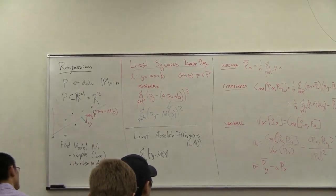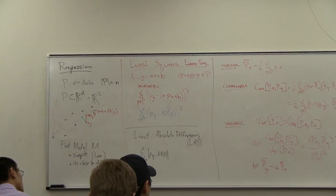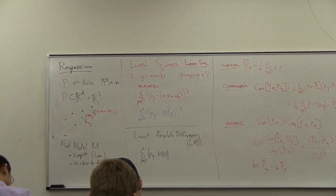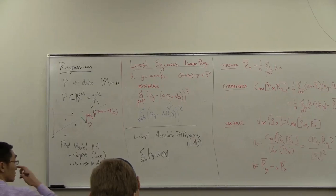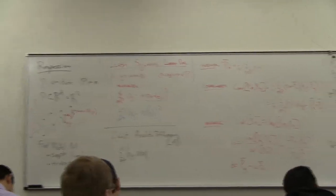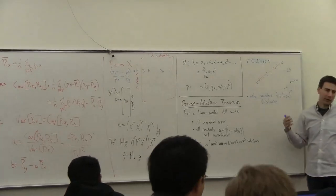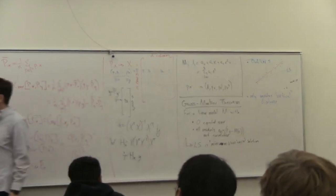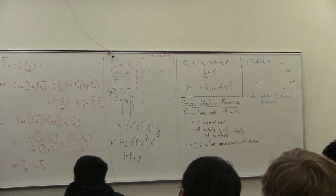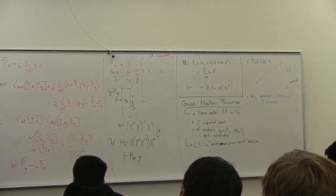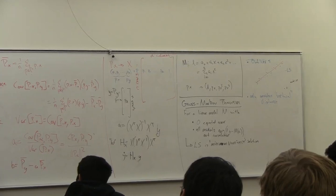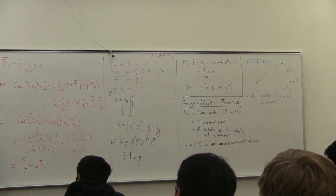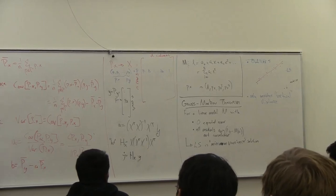Another issue is that it only considers the vertical distance — or the distance along the y coordinate. This isn't necessarily a problem. Maybe you're trying to predict a particular value in your data and the others you assume are exact. In that case, least squares is the right thing to do. But there are other techniques that say I want to fit a line through here that minimizes the sum of these distances — these projections onto the closest point. There's another solution for that which is different than least squares. So this vertical distance as a measure of error was a modeling choice.